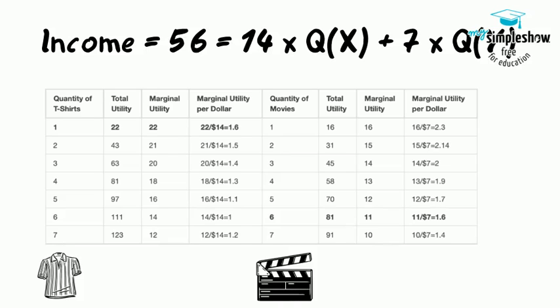This person will continue to buy movie tickets until the marginal utility per dollar declines below the t-shirt option. It will be optimal to buy 1 t-shirt and 6 movie tickets.